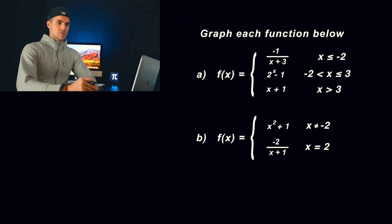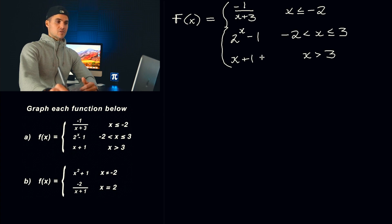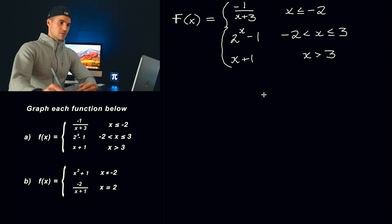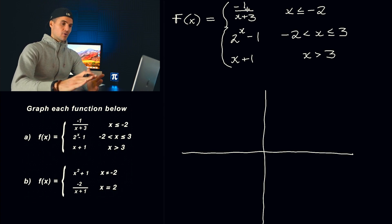So we have these two piecewise functions here that we have to graph. Starting with this first one, we got negative one over x plus three for x values that are less than or equal to negative two. I'm going to graph this reciprocal function in general first.